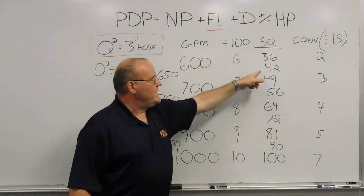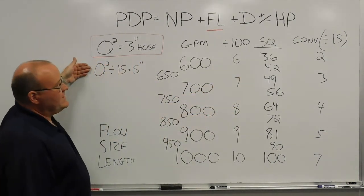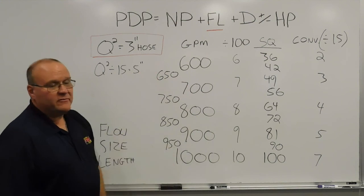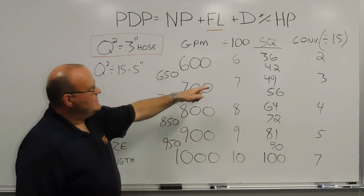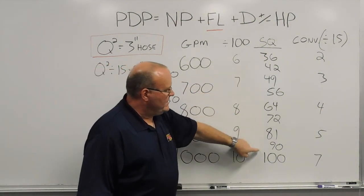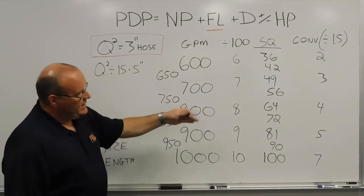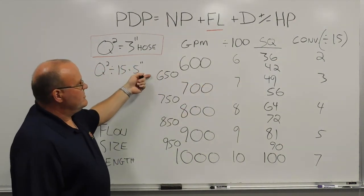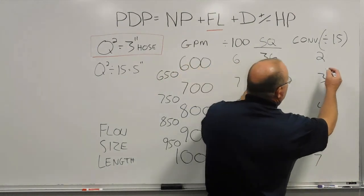Again, conversion factor for that, by 15, that's going to be just shy of 3 pounds of friction loss. So for these, the majority of them, until we get down to 90, are going to be in-between the other two numbers. So 650 is going to be about 2.5 or so.